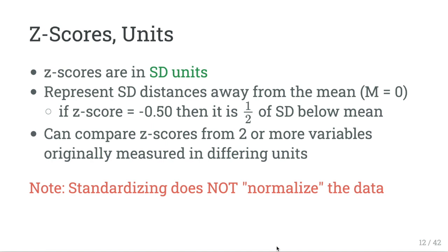Another thing Z-scores can do is allow comparison across two or more variables measured in different units. So if someone is 5 feet 11 inches tall and weighs 200 pounds, we can't directly compare those numbers. But if we compute Z-scores, we can see whether they have a high Z-score on height or weight and understand where that person fits in the general population. And standardizing does not normalize the data — that's a common misunderstanding.